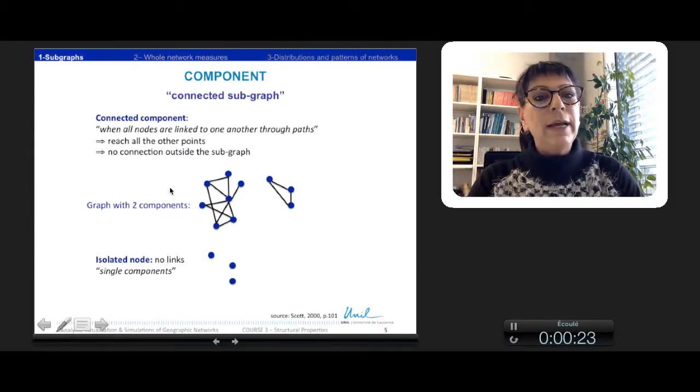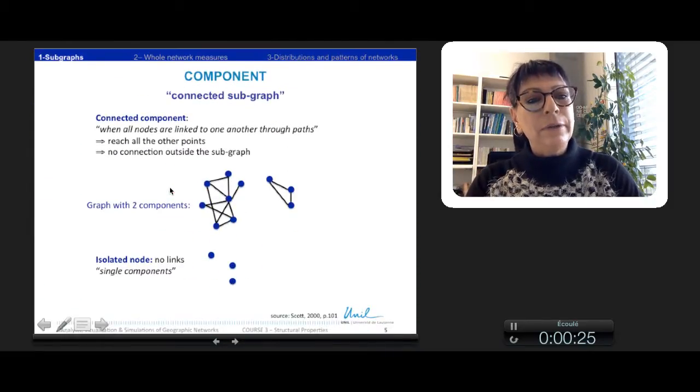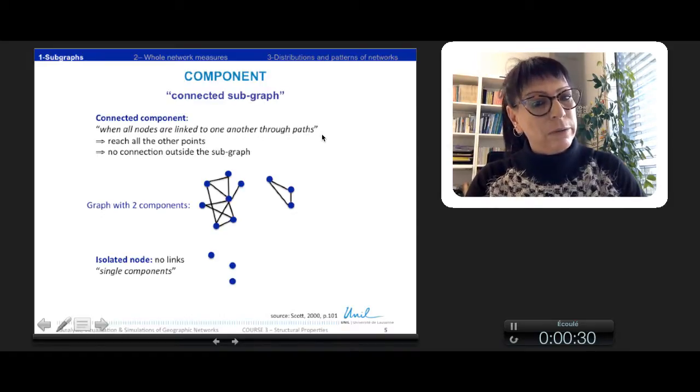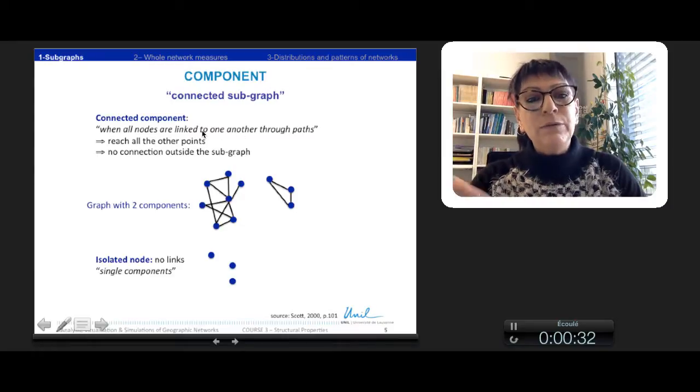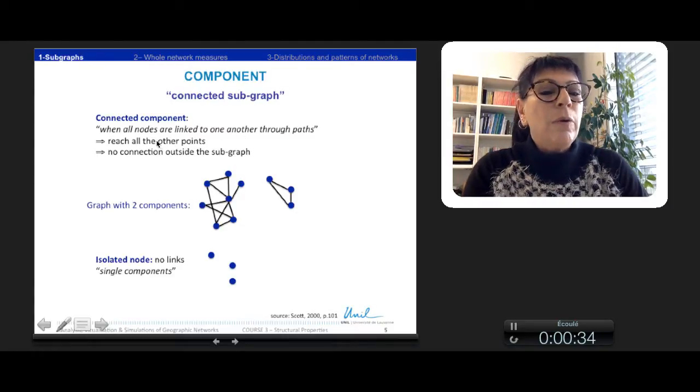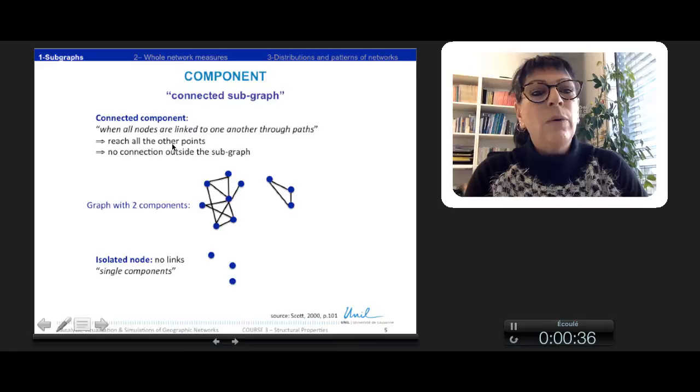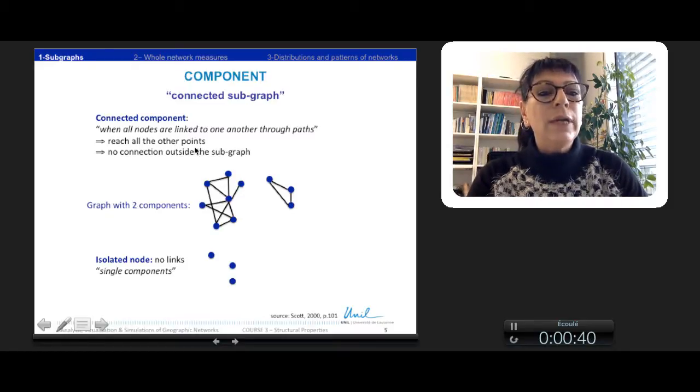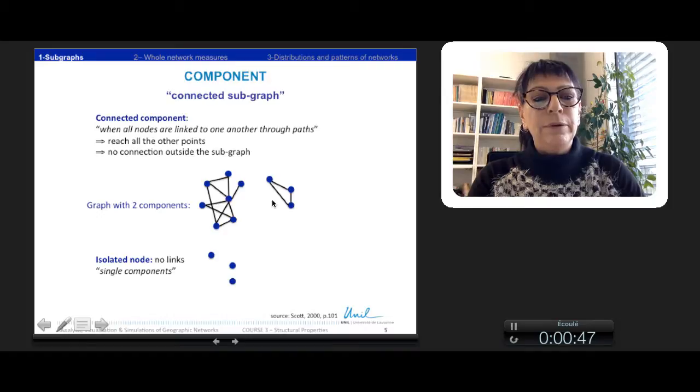We can define a connected component when all the nodes are linked to another through a path. So at least through a path, from every node you can reach all the other nodes. And there is no connection outside the subgraph. For example, here the graph has two components, two different components.